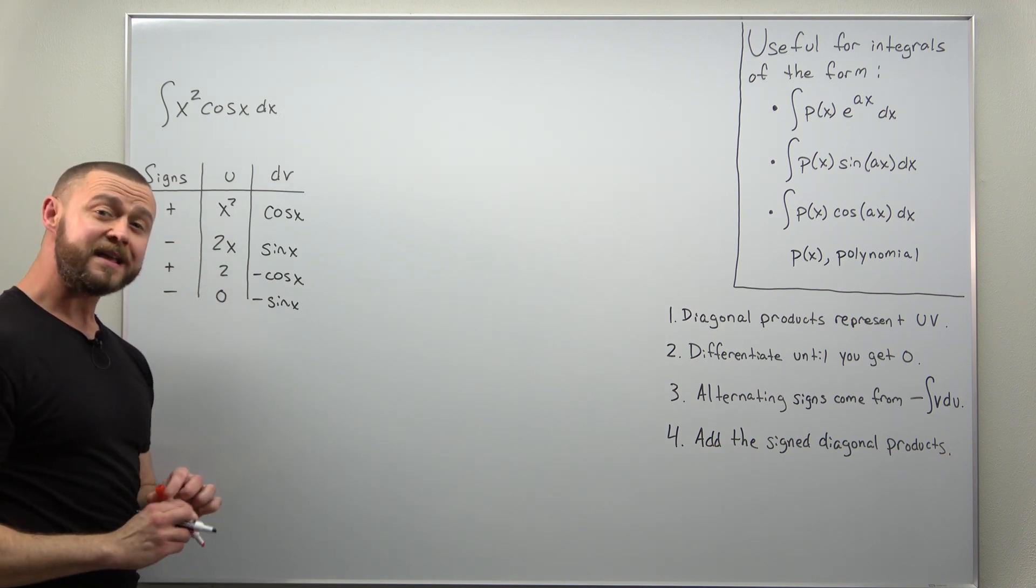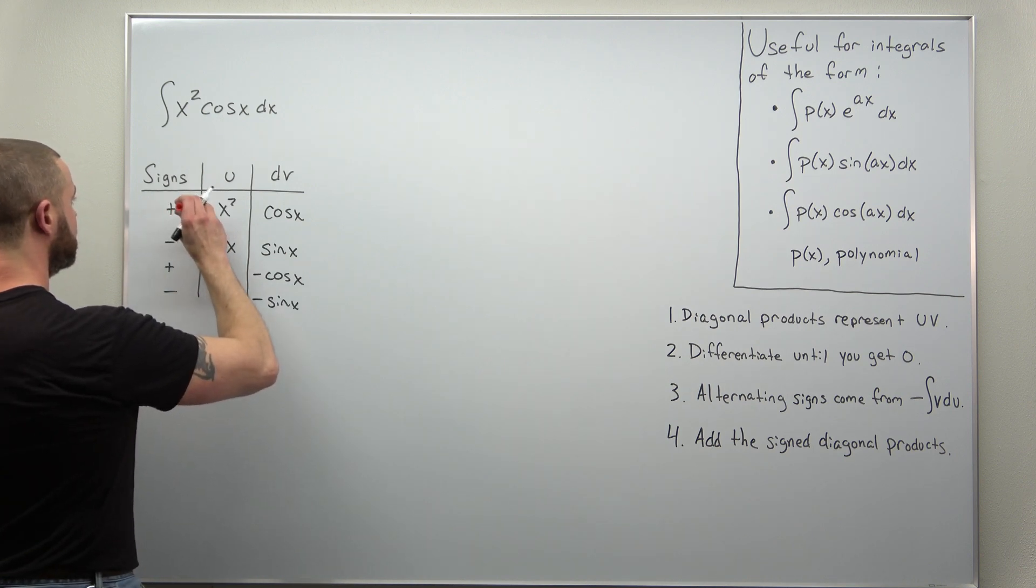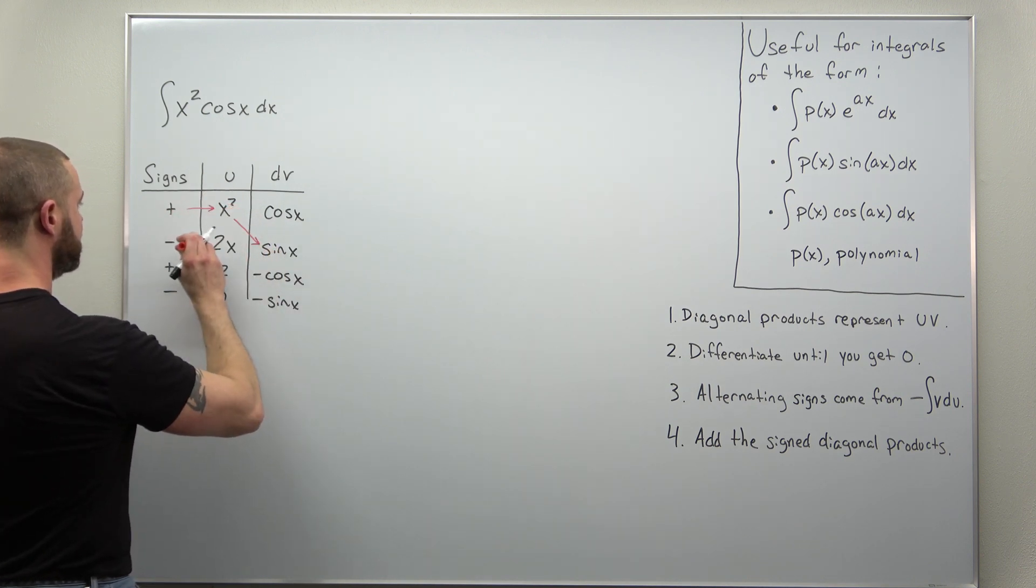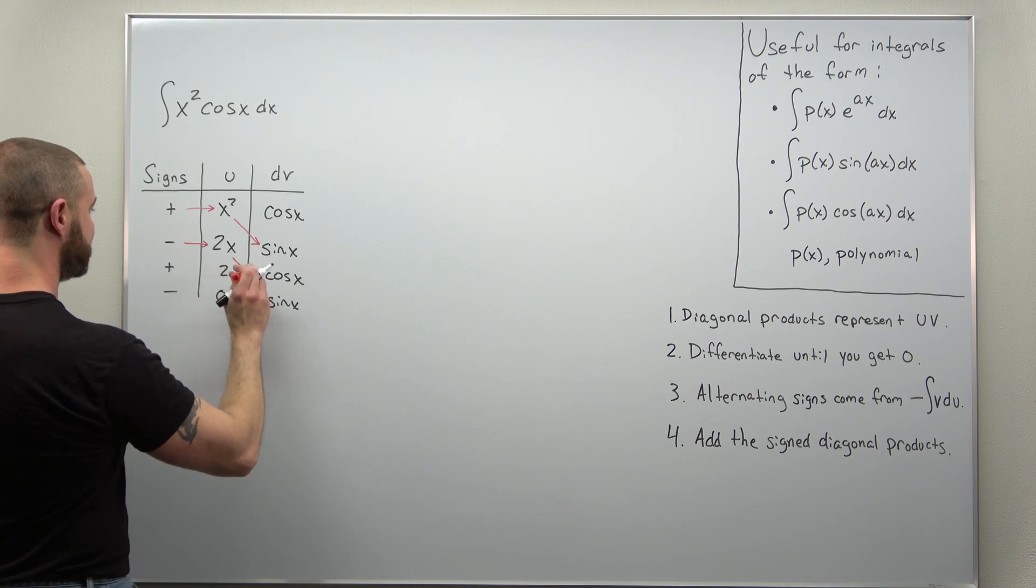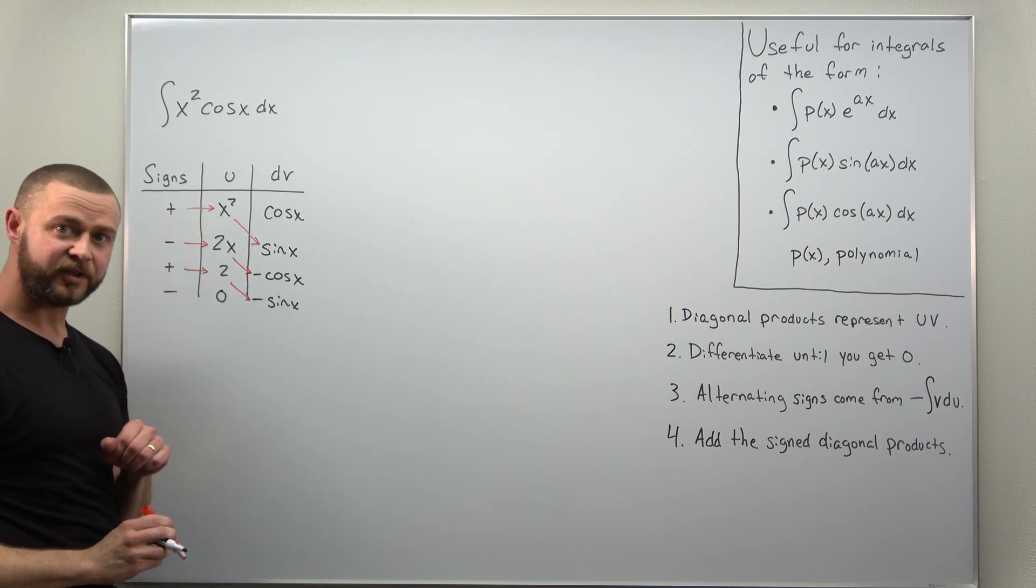And we can get our answer here multiplying across and then diagonally there. Taking the signed diagonal products there.